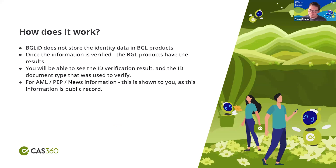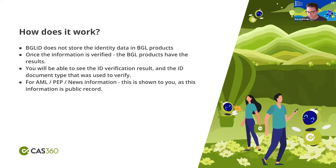BGL-ID does not store the identity data in its products. Once you have the result, the data doesn't need to be stored. In the case of Request ID, the data is never stored. For Verify, once it's verified you can remove it. All of the verification response you receive does not contain any ID-specific data — it doesn't have the passport number or license number. It only shows the document type and whether it was successful or unsuccessful. For AML, PEP, sanctions and adverse news, all of that is a public database, and in some cases you'll need to review it when someone is flagged.